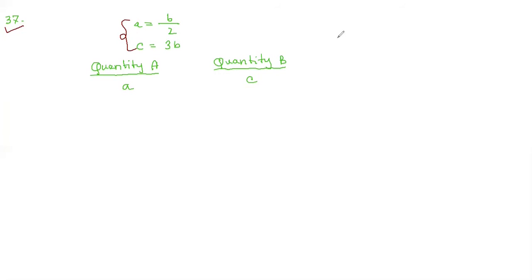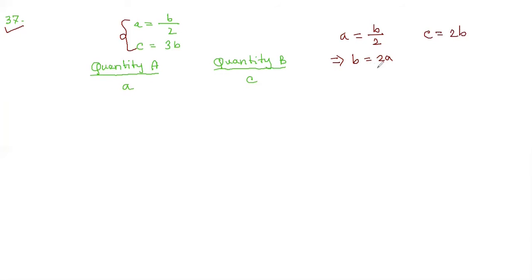Let's simplify these two conditions. The first condition is A equals B over 2, which we can rewrite as B equals 2A. Looking at the second condition, C equals 3B. Now since B equals 2A, we substitute: C equals 3 times 2A.